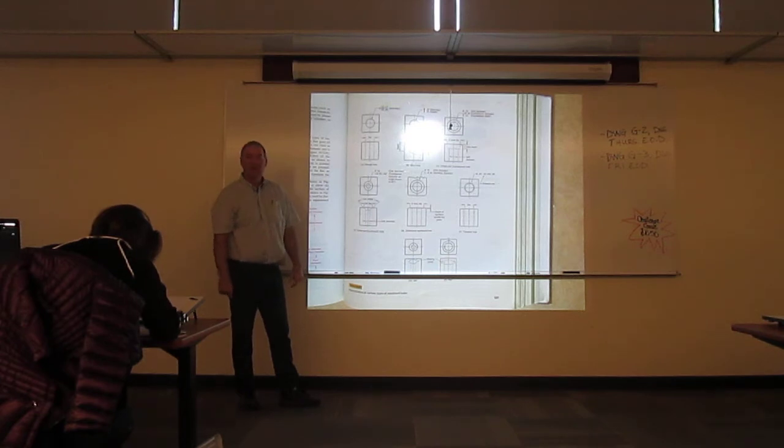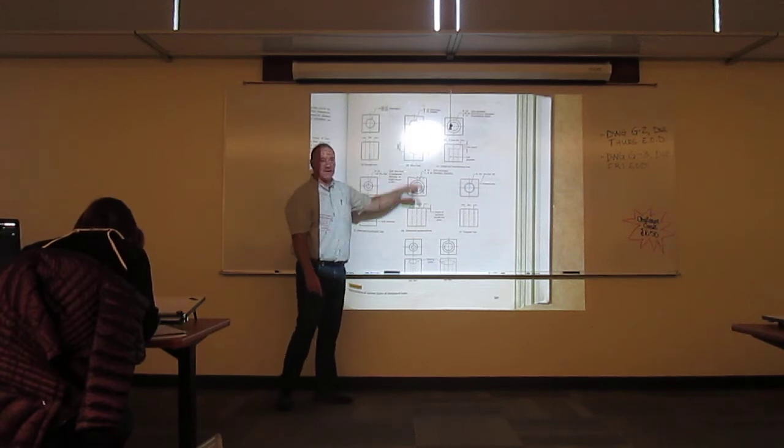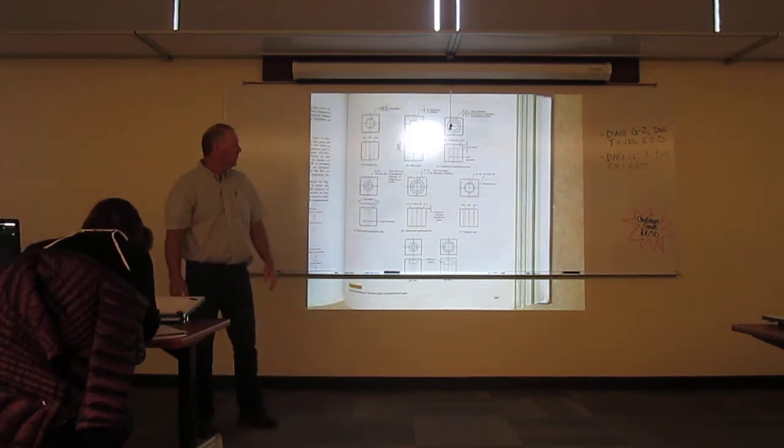That's a through hole or a blind hole. Through hole: dimension, no depth. Blind hole will have depth given. So we've got a lot of those two types of holes.